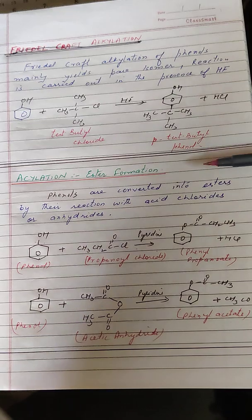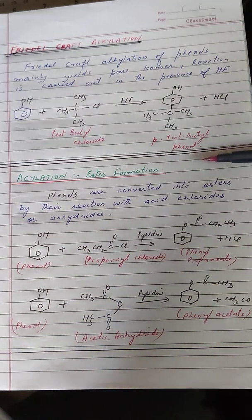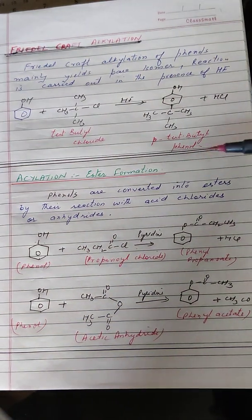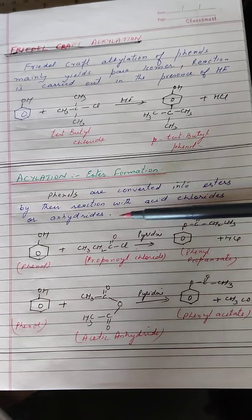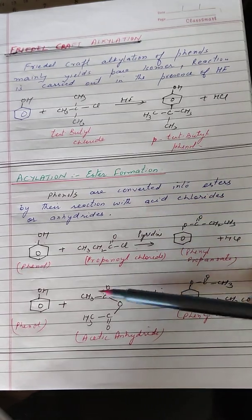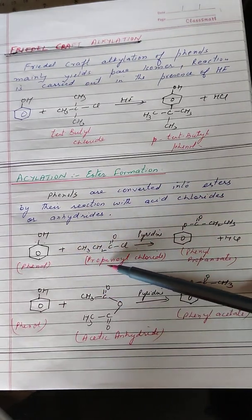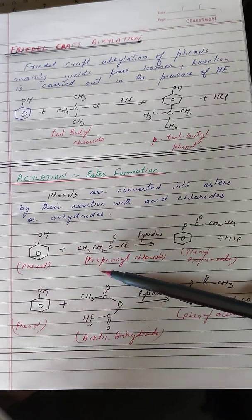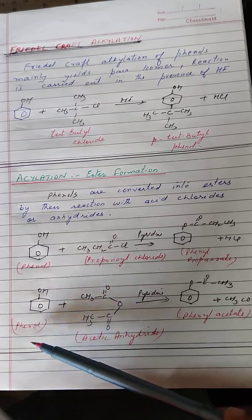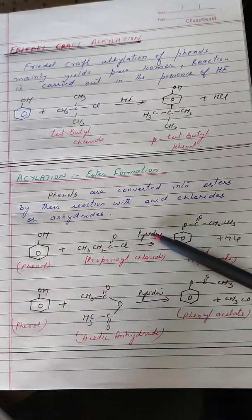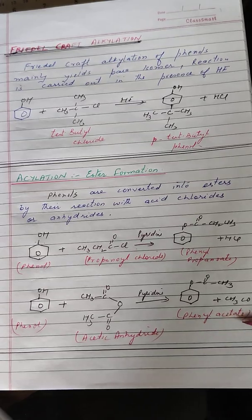Now let us take up acylation or ester formation reaction of phenol. Just like alcohols, phenols also react with acid chlorides and acid anhydrides to give esters. Phenol reacting with an acid chloride such as propanoyl chloride gives phenyl propanoate ester. In another case, phenol reacts with acetic anhydride in the presence of pyridine to give phenyl acetate.